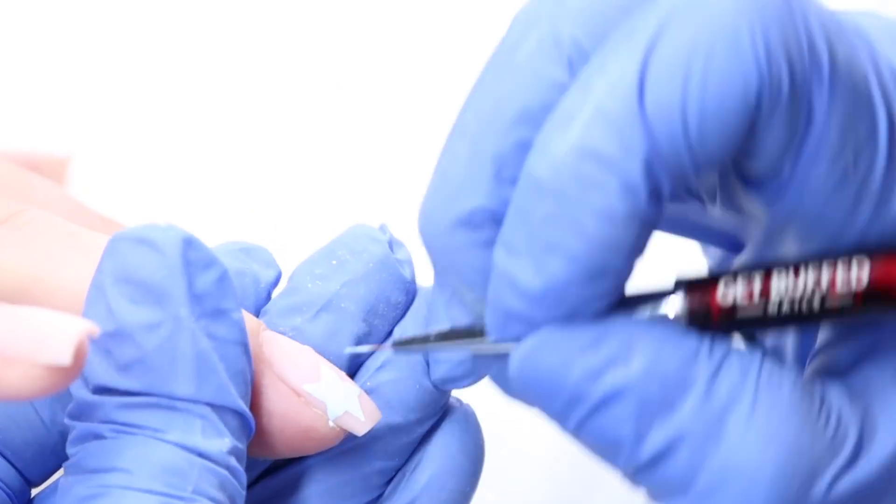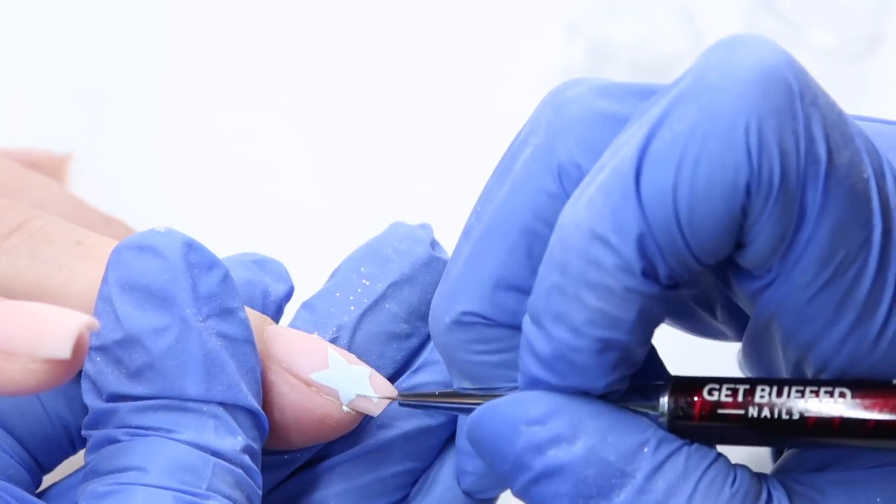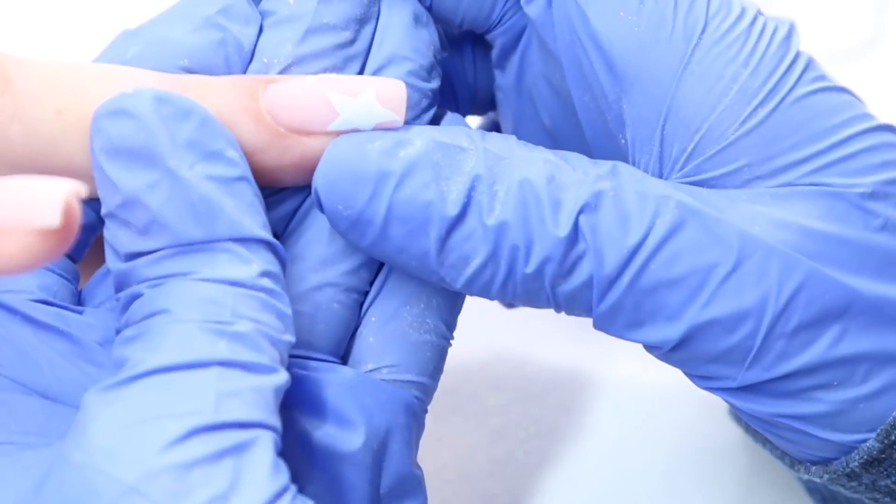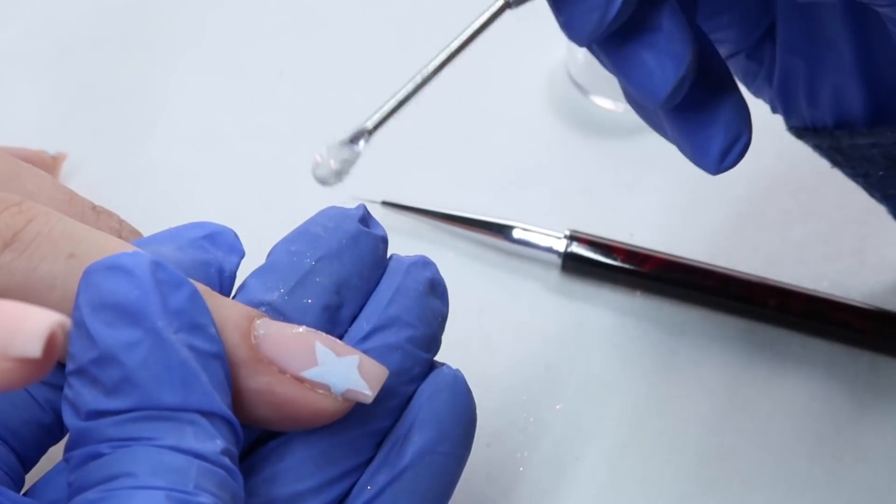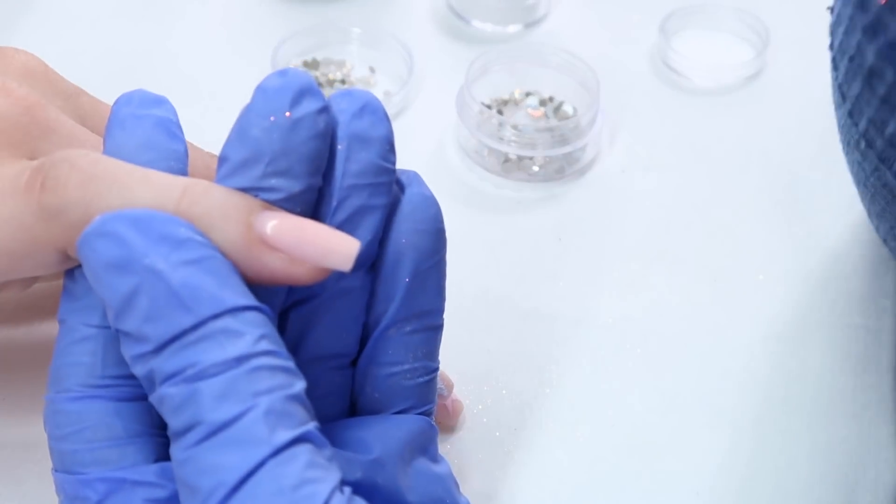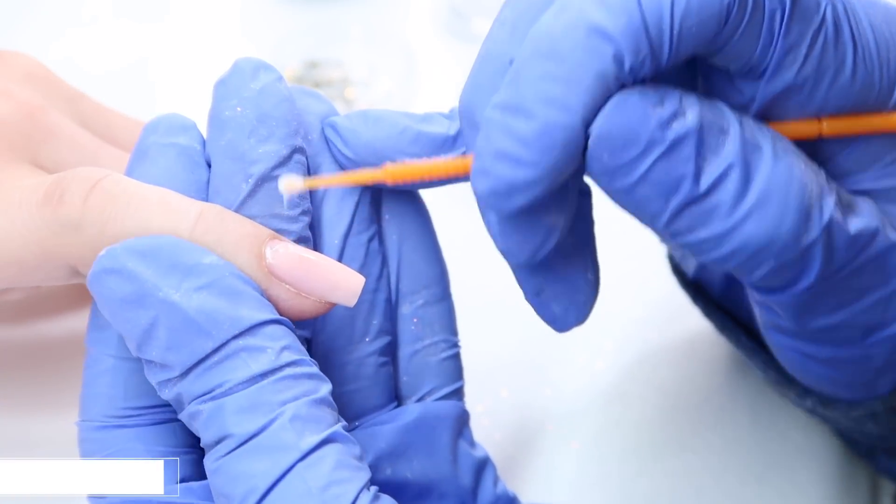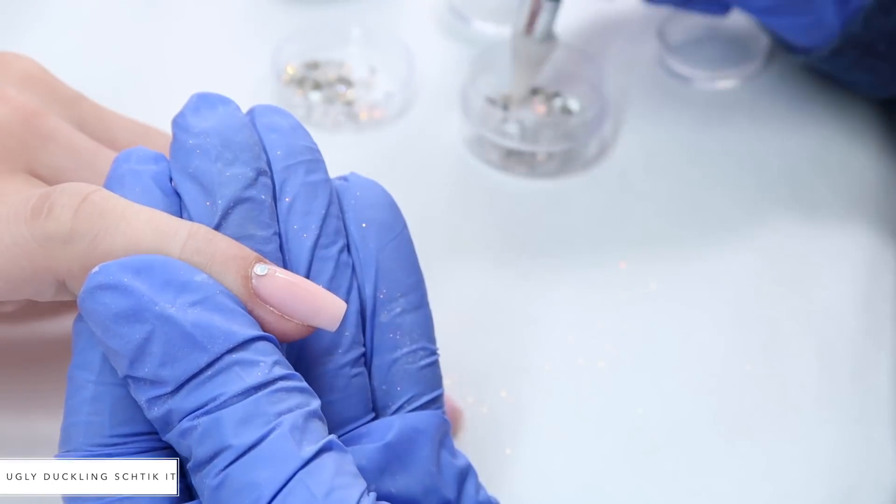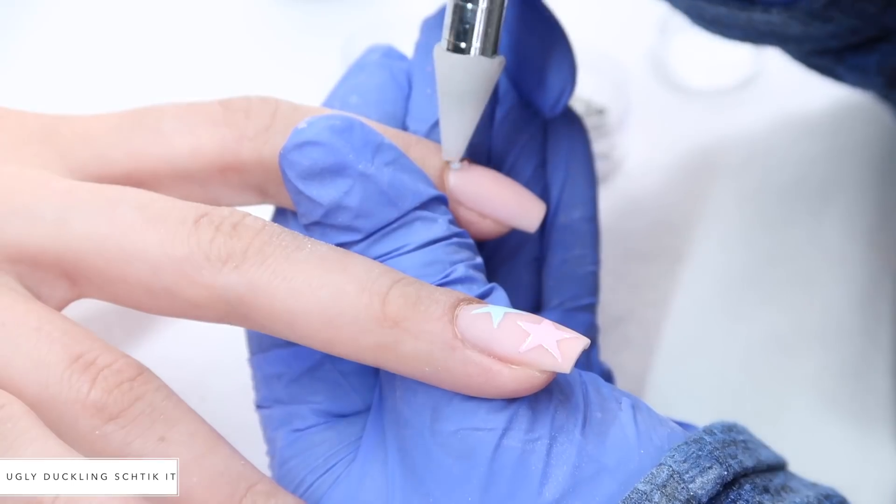Make sure you wipe off any gel that you get on the skin before curing because you don't want to cure gel on the skin. I was finally happy with the way the star turned out and now I'm sprinkling my glitter on top. I gave that a full cure. Now our hand is back out of the light and I'm just applying some Ugly Duckling Stick It glue.